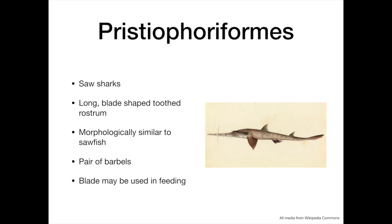The pristiophoriformes, or saw sharks, are also highly recognisable for their long, elongated rostrum and barbels. They appear morphologically similar to sawfish, an unrelated group of teleosts; however, sawfish do not possess the barbels of their cartilaginous counterparts. The blade of the saw shark is thought to be used for feeding, where it can be slashed from side to side to wound prey.